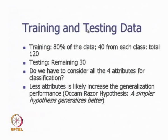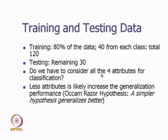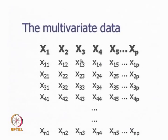The training and testing scenario is: 80% of the data (40 from each class, 120 total) is used for training, and testing is on the remaining 30 examples (20%). The question is whether we need all four attributes for classification — fewer attributes is likely to increase generalization performance. Multivariate data has the form of a matrix with p attributes x1 to xp and n rows corresponding to n data points.